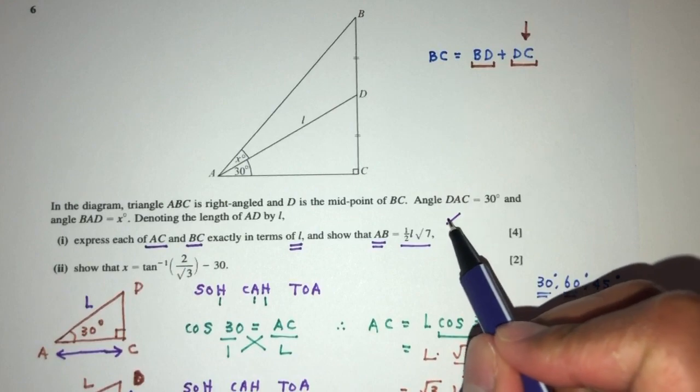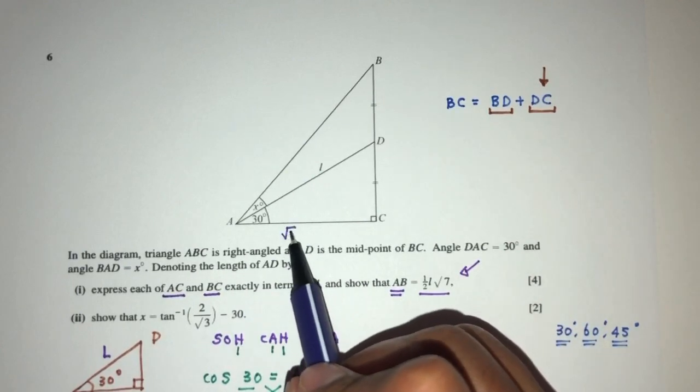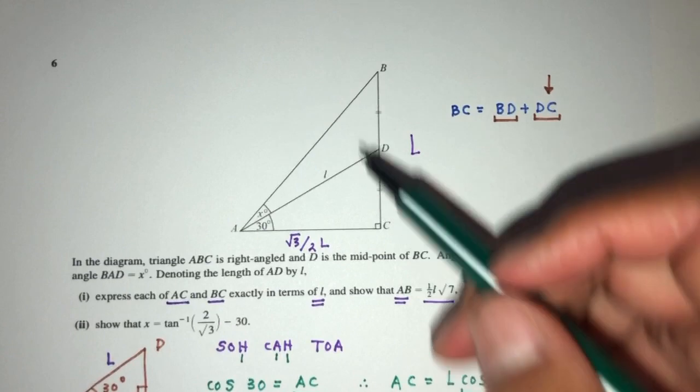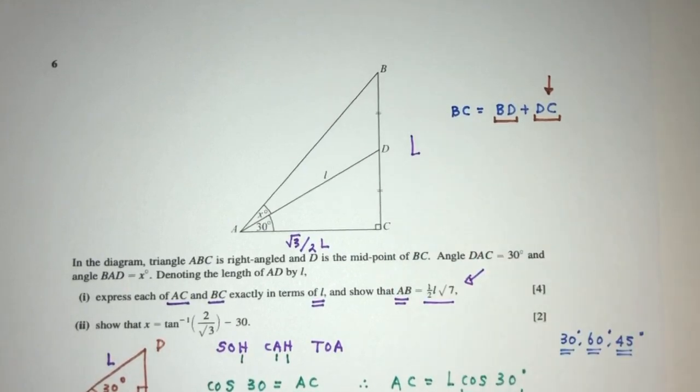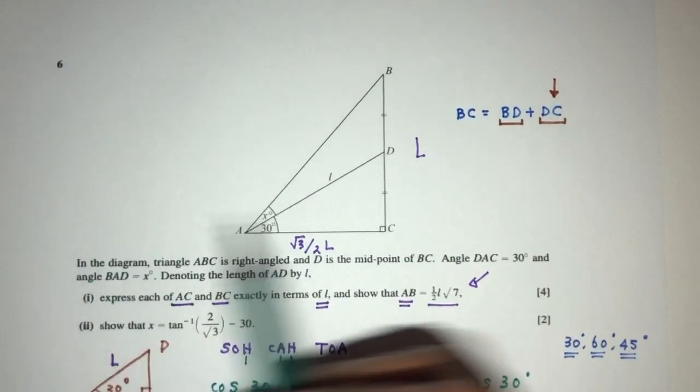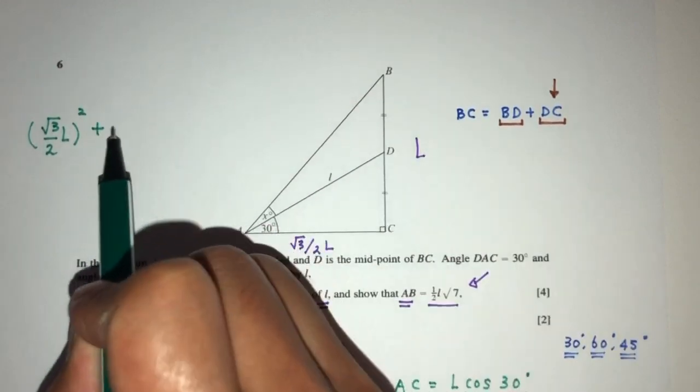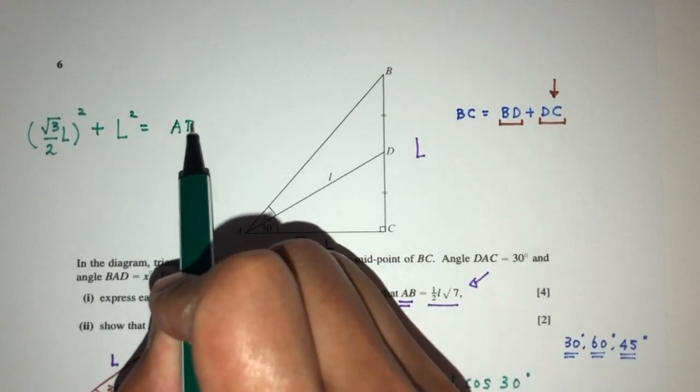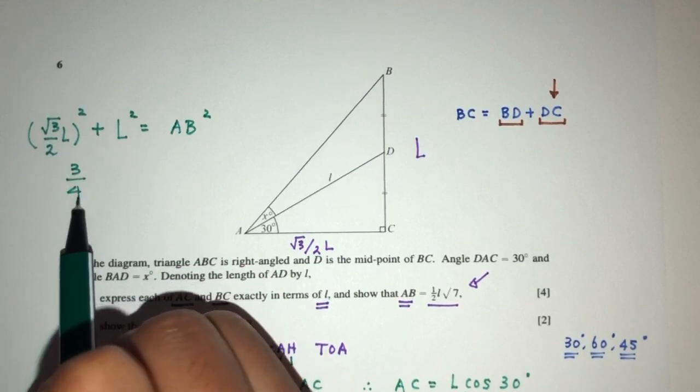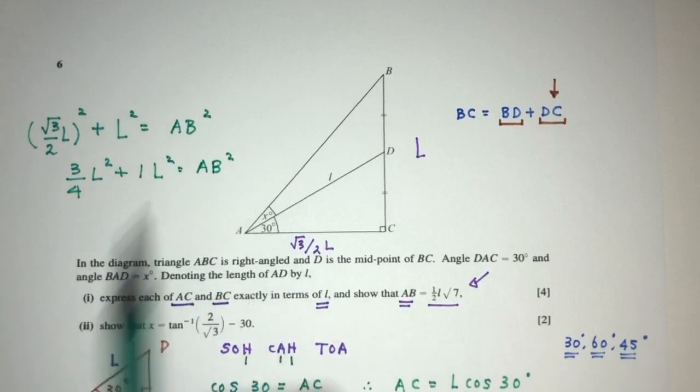Now finally we have to show that AB equals this value. AB is this big side. Since we know AC equals root 3 over 2 L and BC equals L, we have to find this side using the Pythagorean theorem. That gives me root 3 over 2 L squared plus L squared equals AB squared.